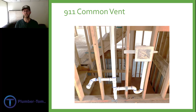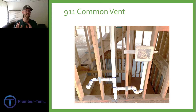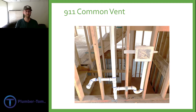Individual vents cannot come off of the side of a stack like this. It would have to come off of that horizontal branch, the arm that goes to the trap, in order to vent properly. From here on out we're going to start looking at venting options that allow us to use less pipe, fewer connections, and still provide enough airflow for all of these fixtures.